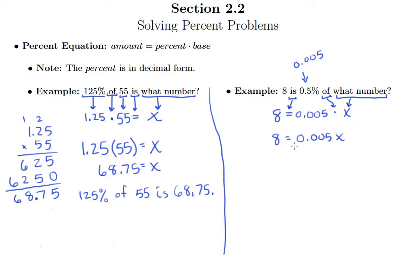Now remember, when we solved proportions, when we had a number times an unknown equals a number, we got the unknown by itself by dividing by the coefficient in front. So what we're going to do is divide both sides by 0.005. That isolates X on the right side, and then on the left side, we just need to carry out that division.